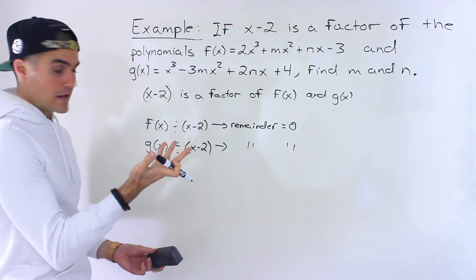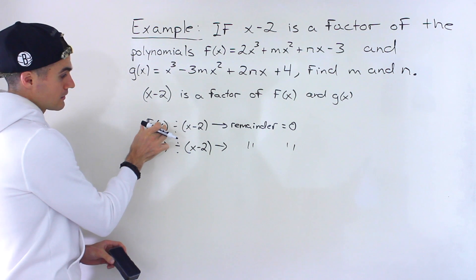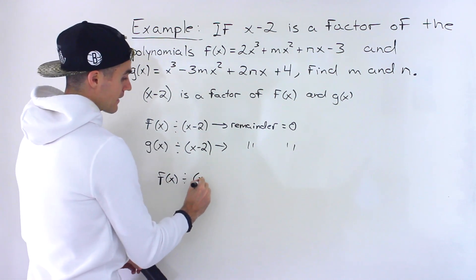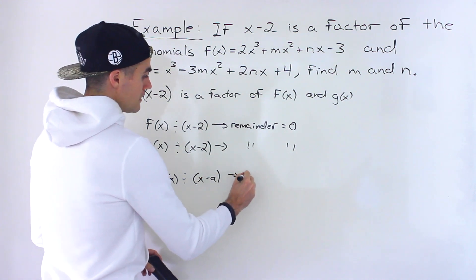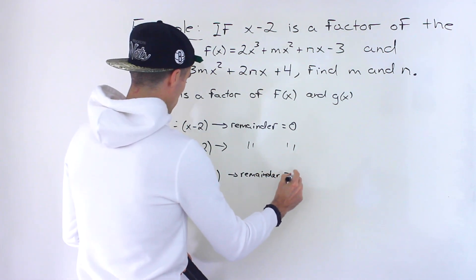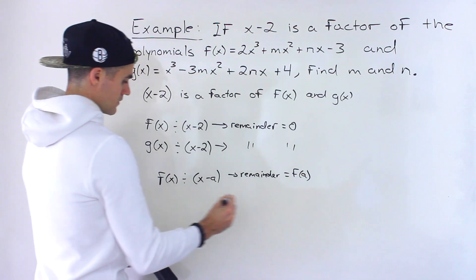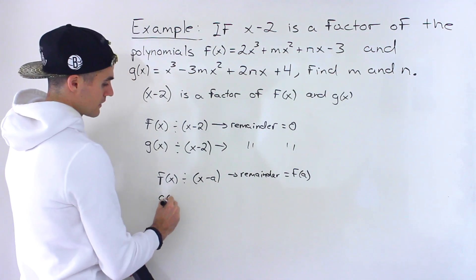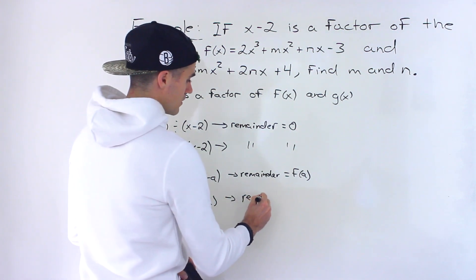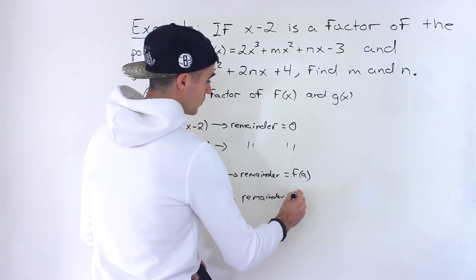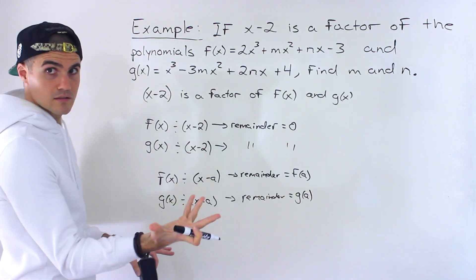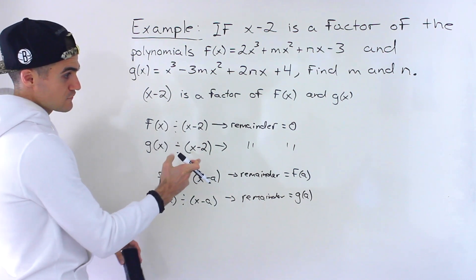Now, another way to get the remainder: in general, if we take f of x and divide it by a factor x minus a, then the remainder is going to equal f of a. And same thing if we take g of x and divide it by x minus a, the remainder is going to equal g of a. These two statements — that's the remainder theorem. And the statements about remainder being 0 — that's the factor theorem.